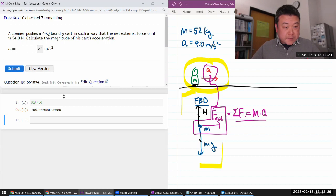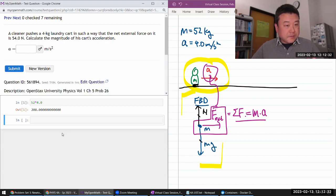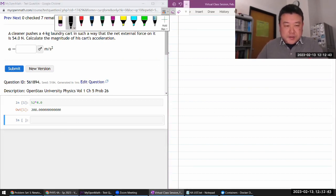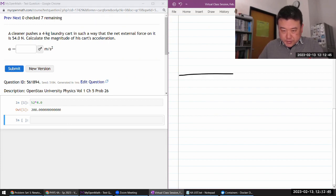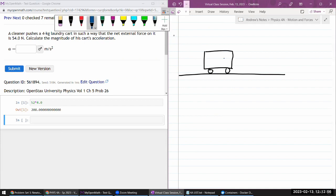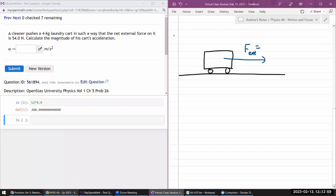So it says, I think it's fine. So it says a cleaner pushes a, all right, there's things interacting. So let me just start by sketching. So I got some laundry cart that's being pushed by someone. So there's going to be some external force. It looks like I'm given that external force of 54 newtons. And I'm also told what the mass of the cart is, 4 kilograms.